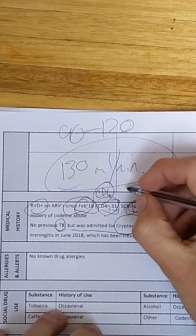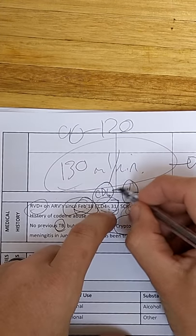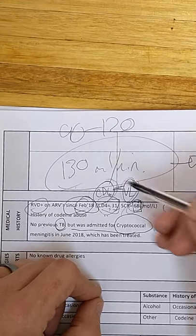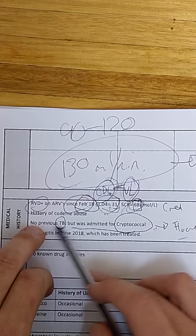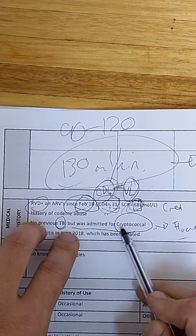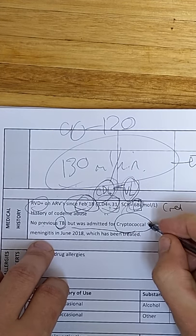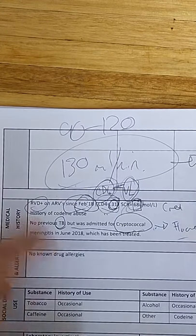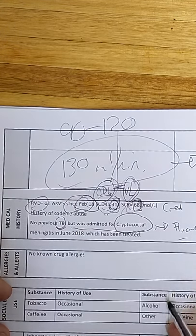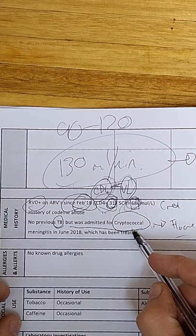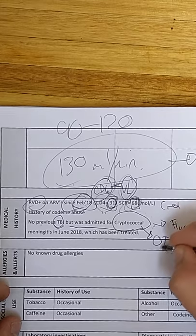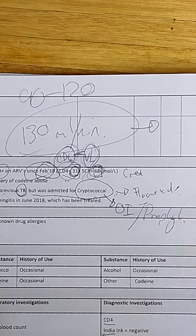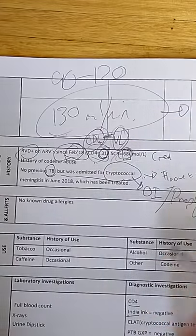Now we're seeing here, it's RVD positive on ARVs since February. CD4 of 51. And this was now at the baseline when he started on the ARVs. Another important thing to mention is that the CD4 count is the only thing that we really need according to the guidelines to monitor a patient. But we'll see what happens next. As far as my mind goes, the viral load does tell you, or does confirm what's going on with the CD4 count.